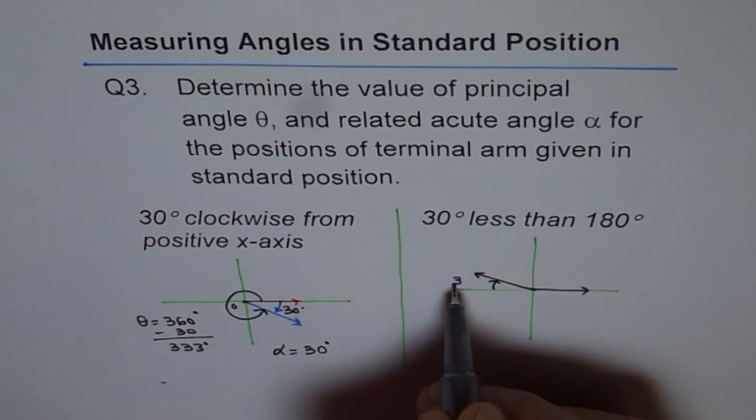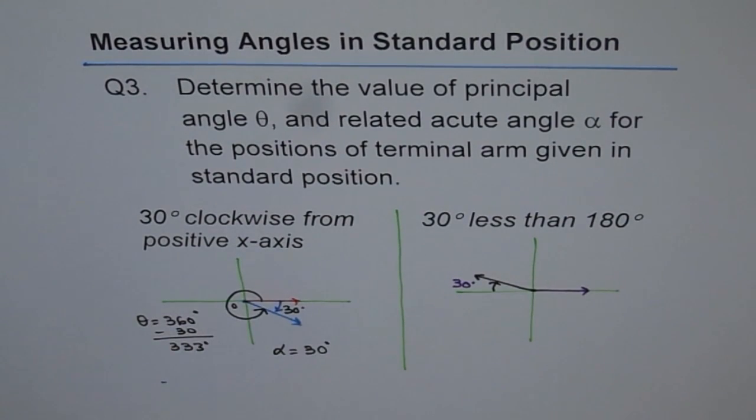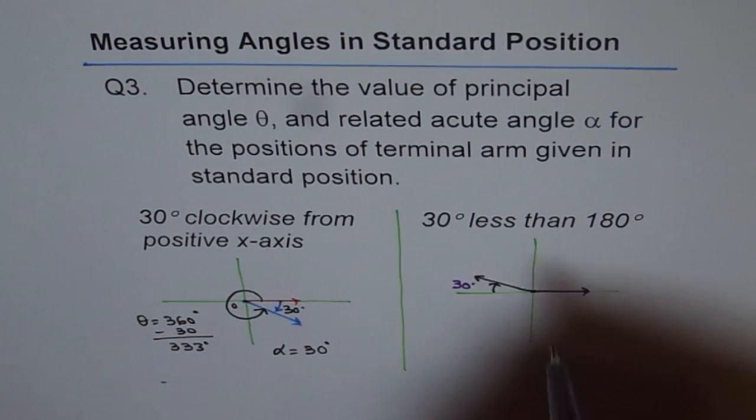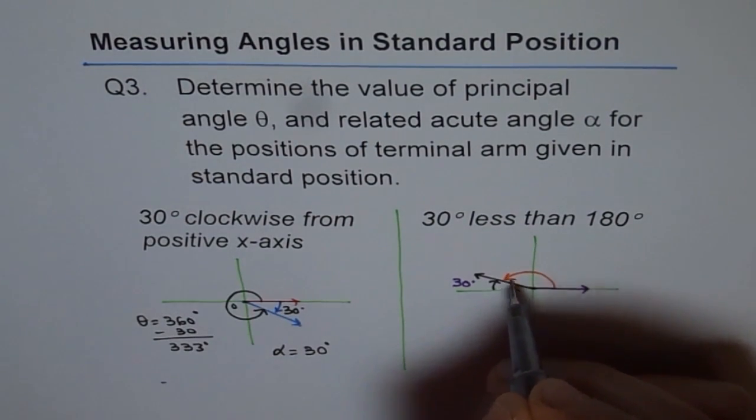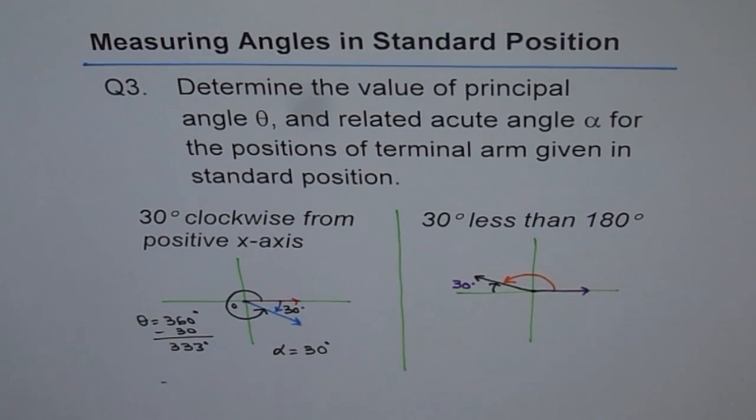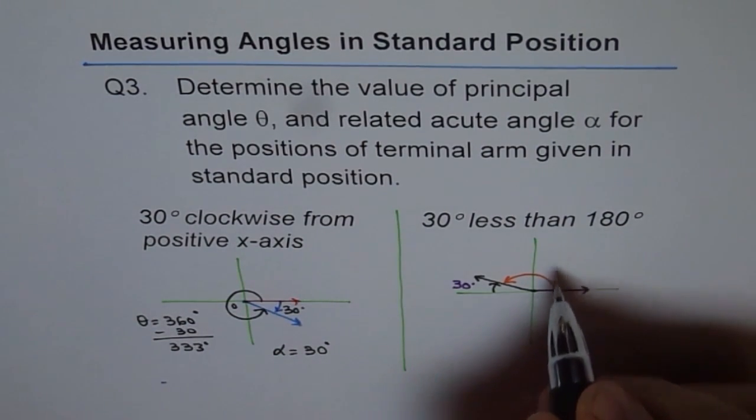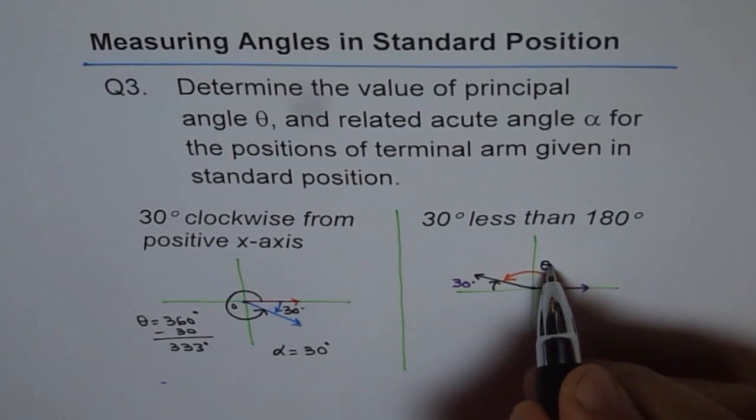Now if this much is 30. Then how much is this? That should be 180 minus 30. So let's calculate. So what is principal angle? That is our principal angle theta. And this is alpha.